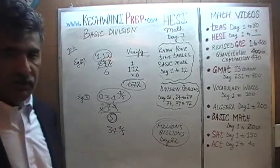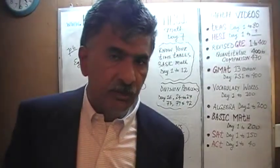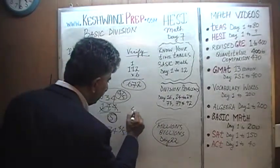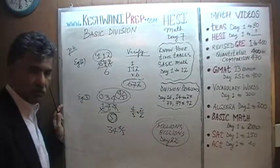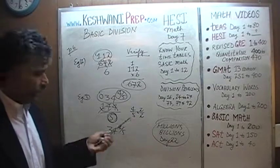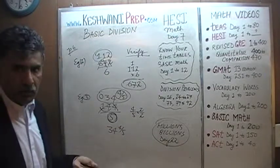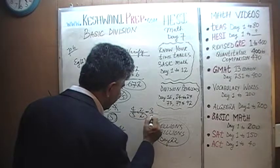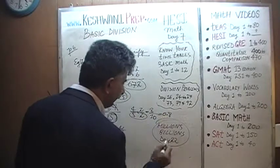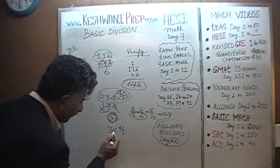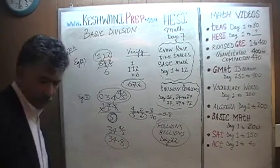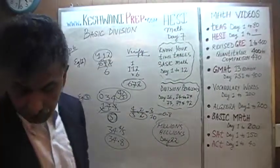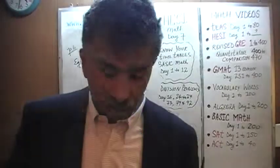Now, if the answer choices on the exam are presented in mixed number form, you're done. If the answer choices are presented in decimal form, then you have to go one more step and convert to decimal — which is not a big deal. We have 4 fifths here. If you multiply top and bottom by 2 — that's multiplying by 2 over 2, which is just 1, so we haven't changed its value — we get 8 over 10. And 8 divided by 10 is simply 0.8. So the answer is either 34 and 4 fifths or 34.8, depending on how the answer choices are presented.